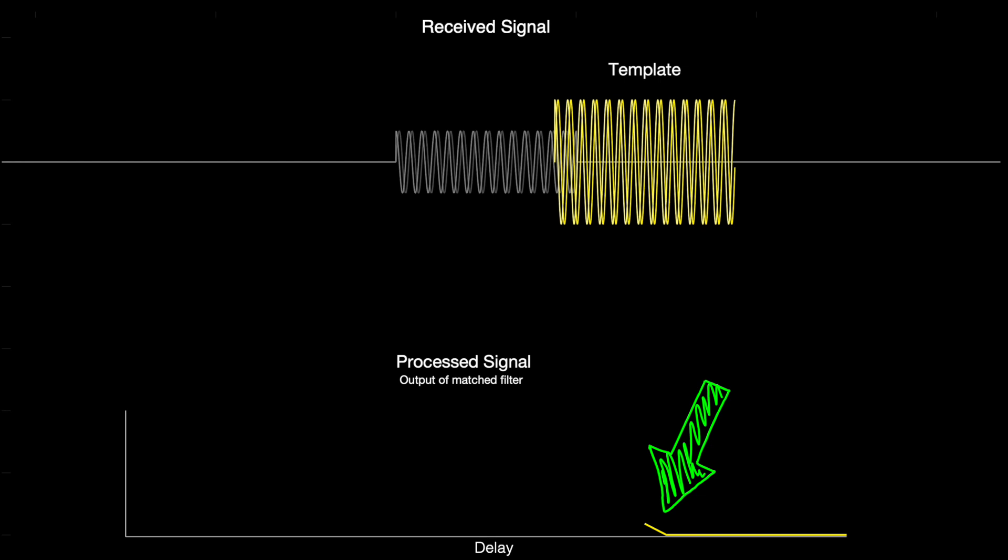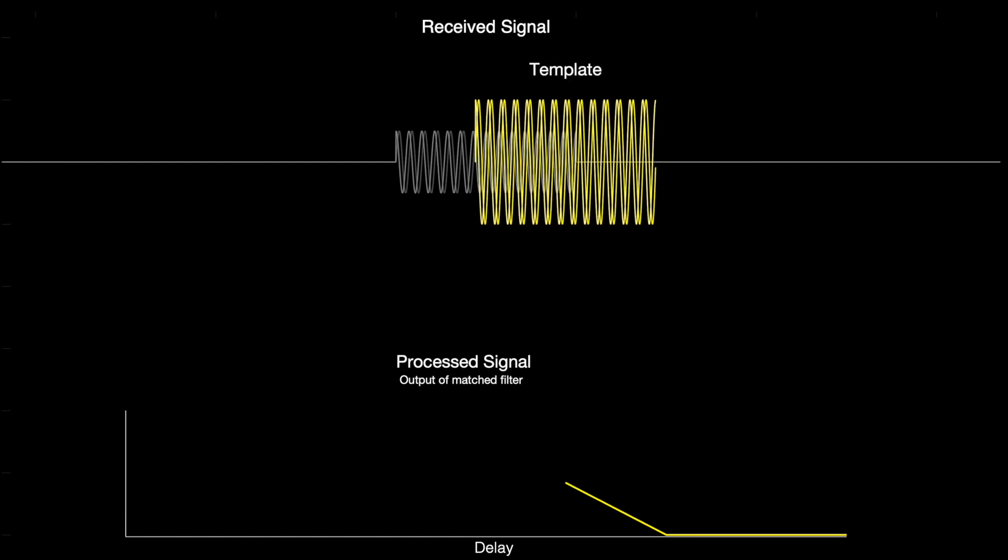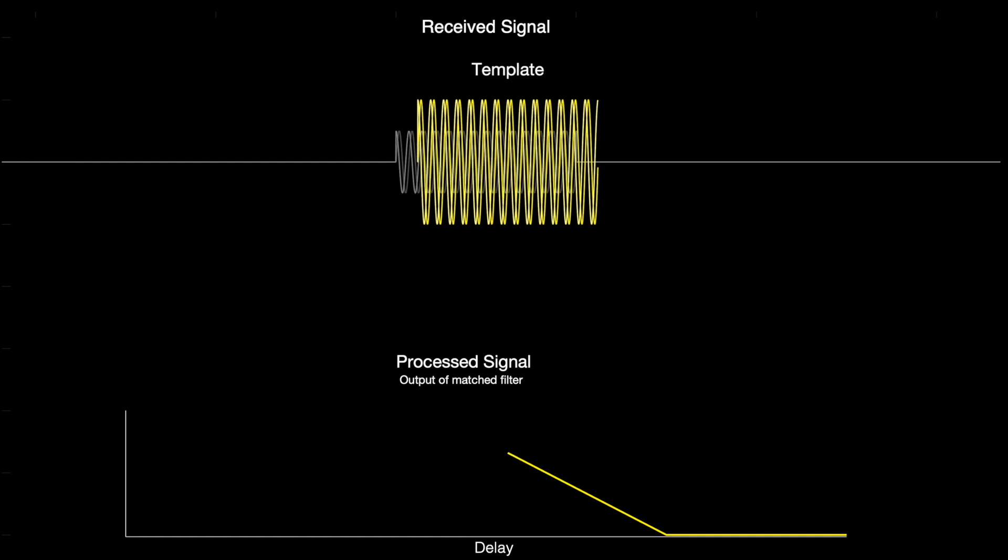Now, there's not much since most of the received signal is zero. But the part of the pulse that has returned is at the same frequency as the template, and therefore is correlated to the template. And down here, we can see that the process signal is now slightly nonzero. And the correlation between these two signals continues to increase until the template perfectly aligns with the returned pulse.